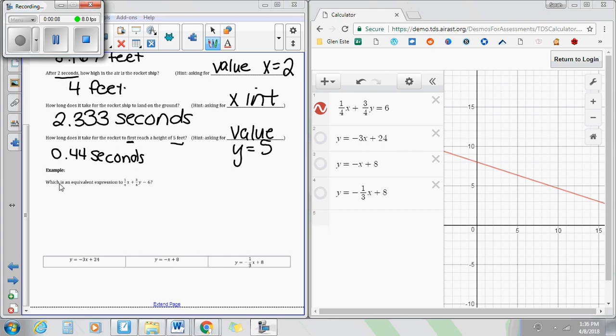So when this question is asking which is an equivalent expression to 1/4x + 3/4y = 6, what we're really asking for is which of these equations down at the bottom can be simplified or reduced to make the same as this.